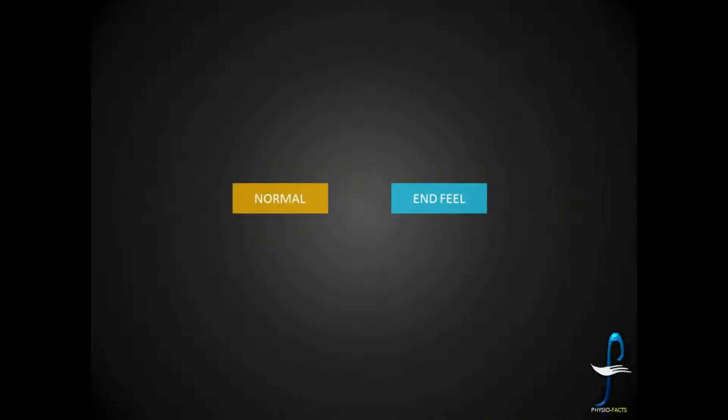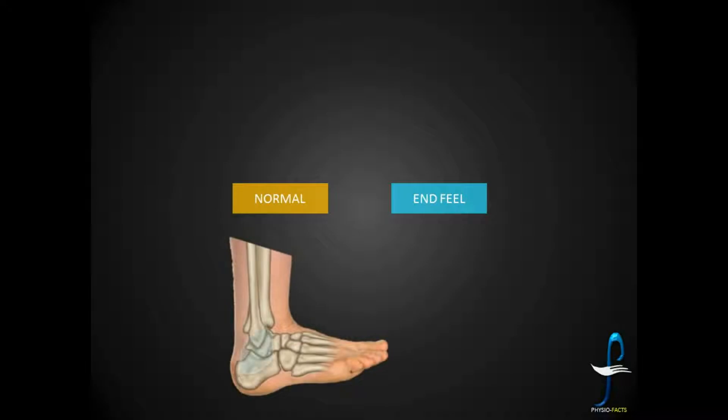Let us know about the normal end feel first. Every joint in our body has a restraint or constraint which limits the range of motion. For example, ankle dorsiflexion is limited by the posterior capsule and tendo achilles. Another example is elbow extension, where the movement ceases by the bony contact of olecranon over the humerus. These are the normal end feels.